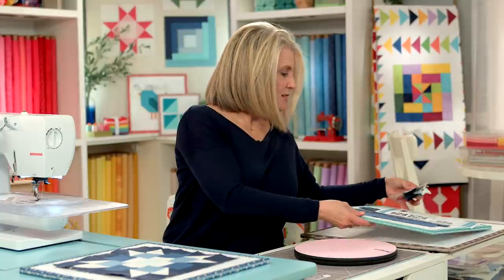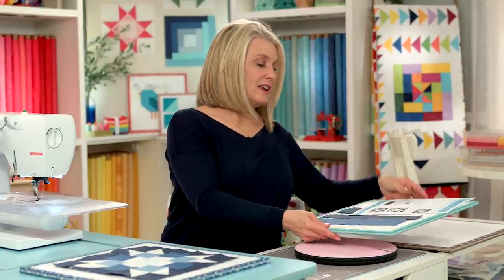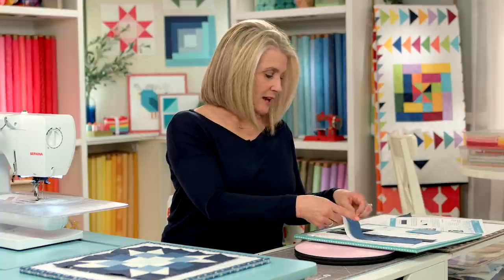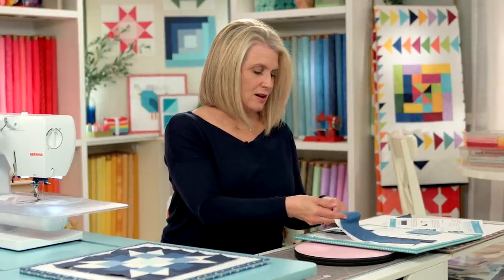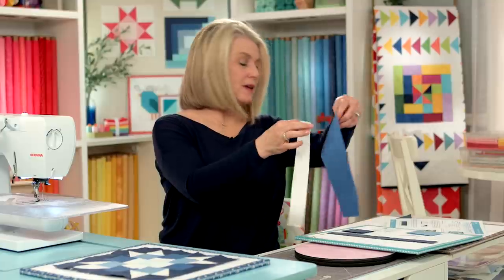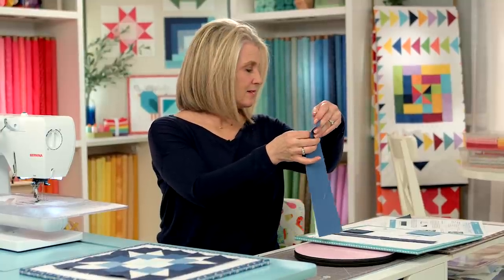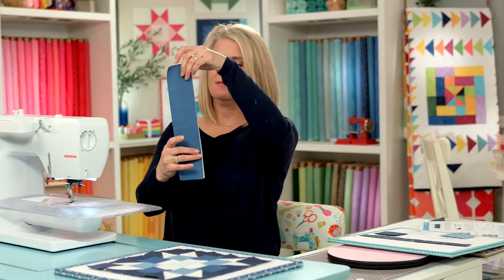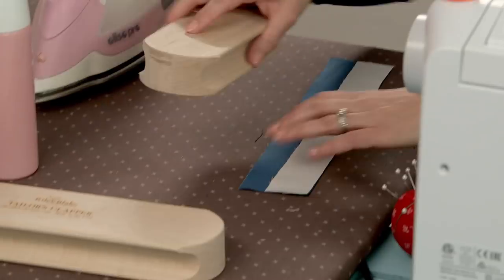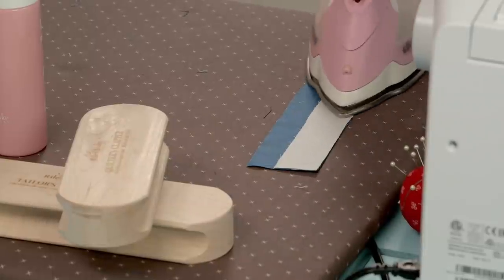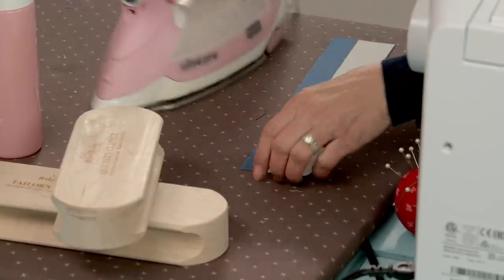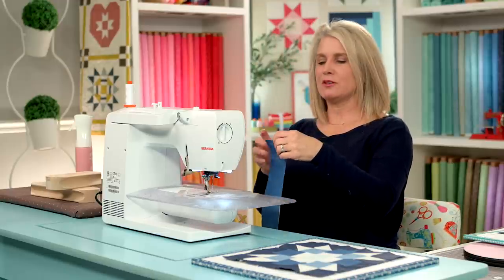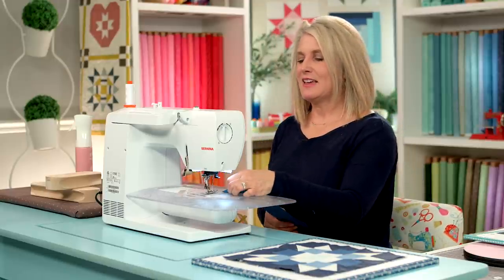Put these back here. The next thing we need to do is do some strip piecing. So we're going to take our H and our B block and strip them together. Strip piece those together. Again, I give them a quick press. You just want to make sure you have an accurate fourth inch seam allowance and you're sewing straight.